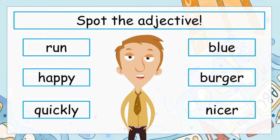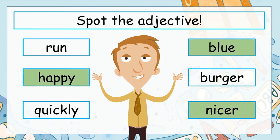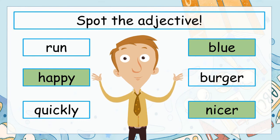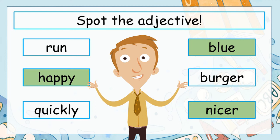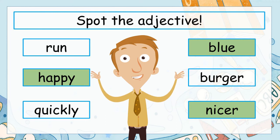Let's try a quick activity. Take a look at the six words below. Can you spot which ones are adjectives — describing words for nouns — and which are not? Pause the video and see if you can find them. Well, how did you get on? There were three adjectives in that list: blue, happy, and nicer. Did you get those? If you did, good job — you're getting the hang of adjectives!